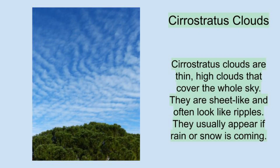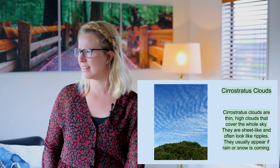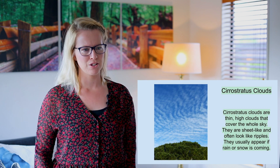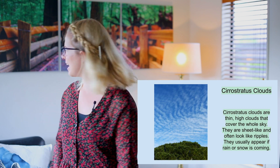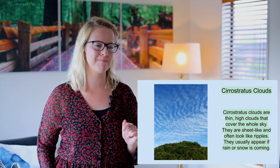Then there are cirrostratus clouds. Cirrostratus clouds are thin, high clouds that cover the whole sky. These are sheet-like and often look like ripples. They usually appear if rain or snow is coming. Now it's really warm today so I can't see any of these outside, so snow is probably not coming our way.